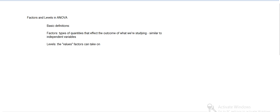So basic definitions: factors are like independent variables. They're types of quantities that affect the outcome of what we're studying. Then levels are the values factors can take on. So we can look at an example to make this clear.